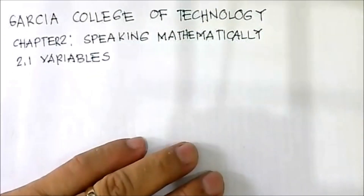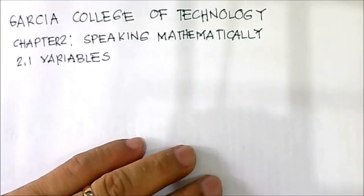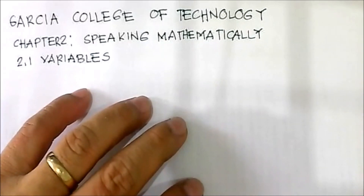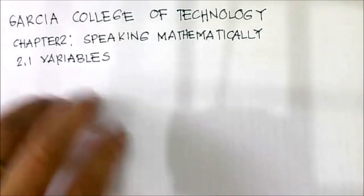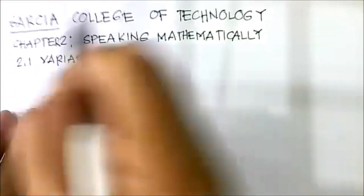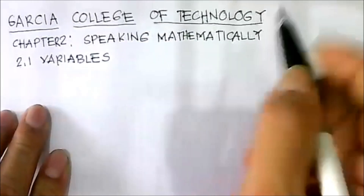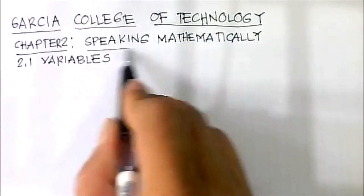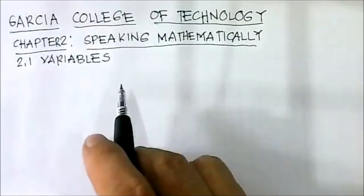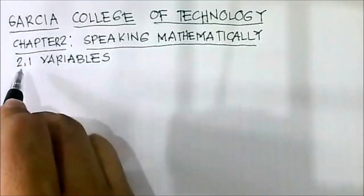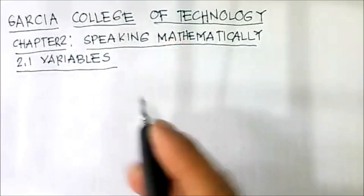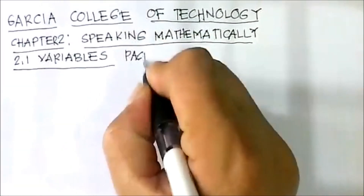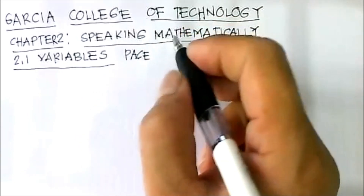Good day everyone. We have here your topic Chapter 2 for your subject Math 1, Mathematics in the Modern World at Garcia College of Technology. Chapter 2 is titled 'Speaking Mathematically.' The subtopic is Variables, which is section 2.1, found on page 24 of your Math 1 module.